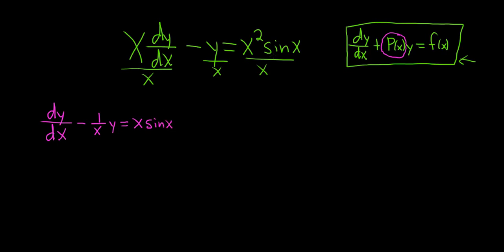The next step when solving linear differential equations is to compute something called the integrating factor. So the integrating factor is μ of x and it's equal to e to the integral of big P of x dx. So big P is just whatever is in front of the y. So in this particular case, it's just negative 1 over x. So this is e to the integral of negative 1 over x dx.